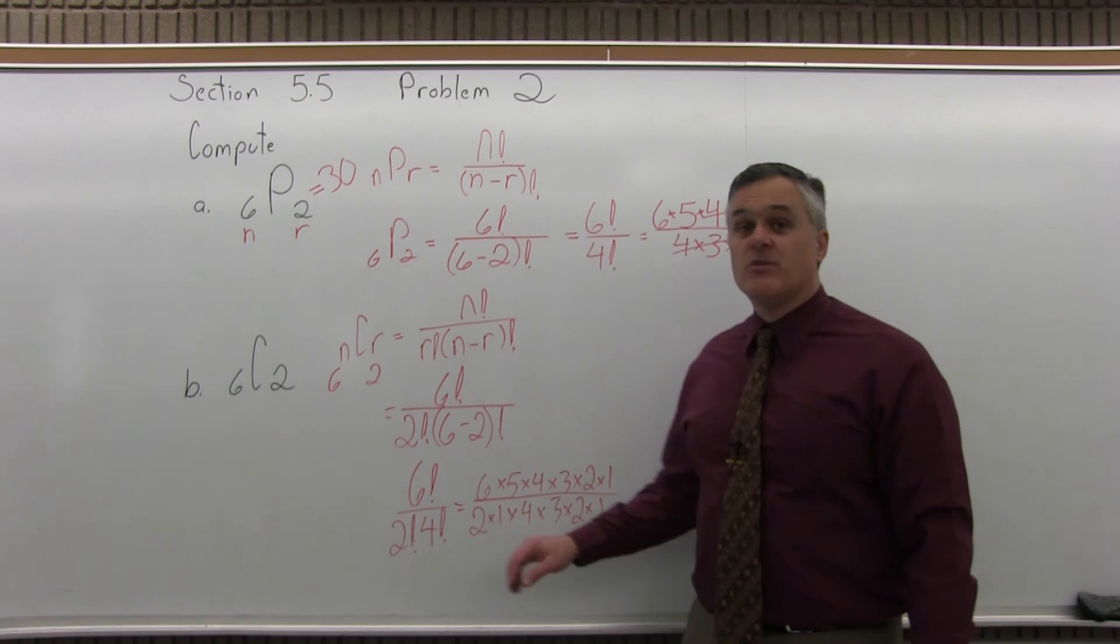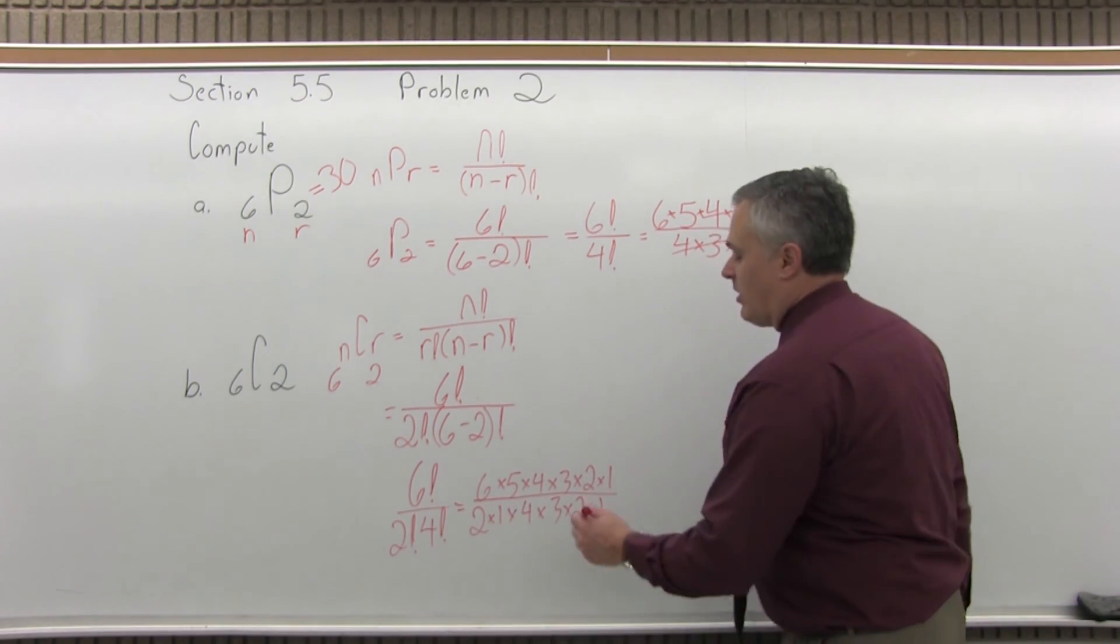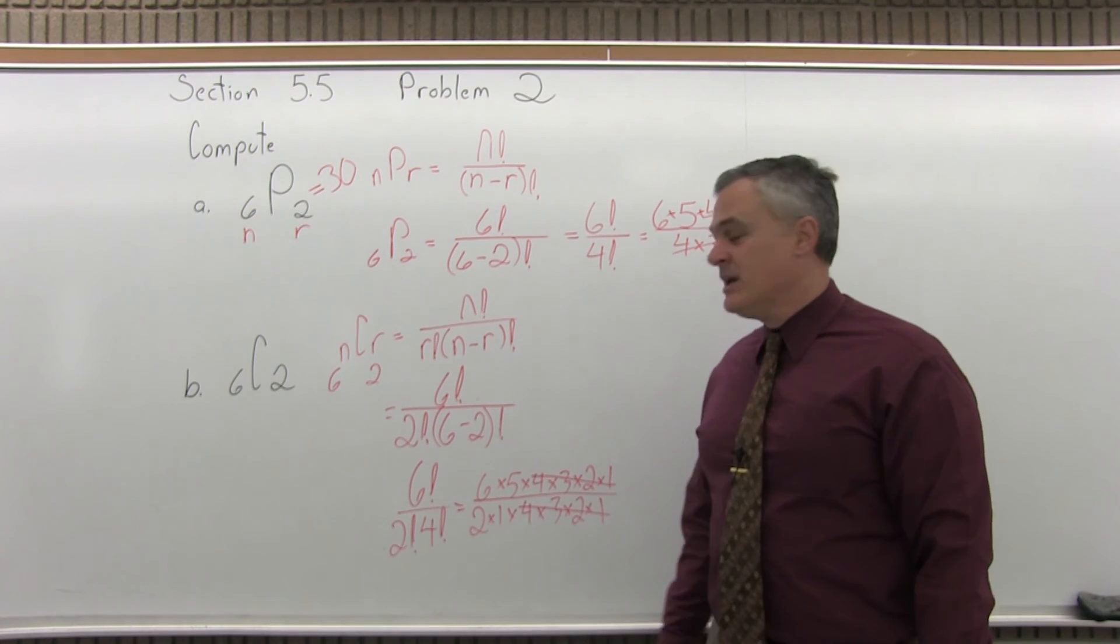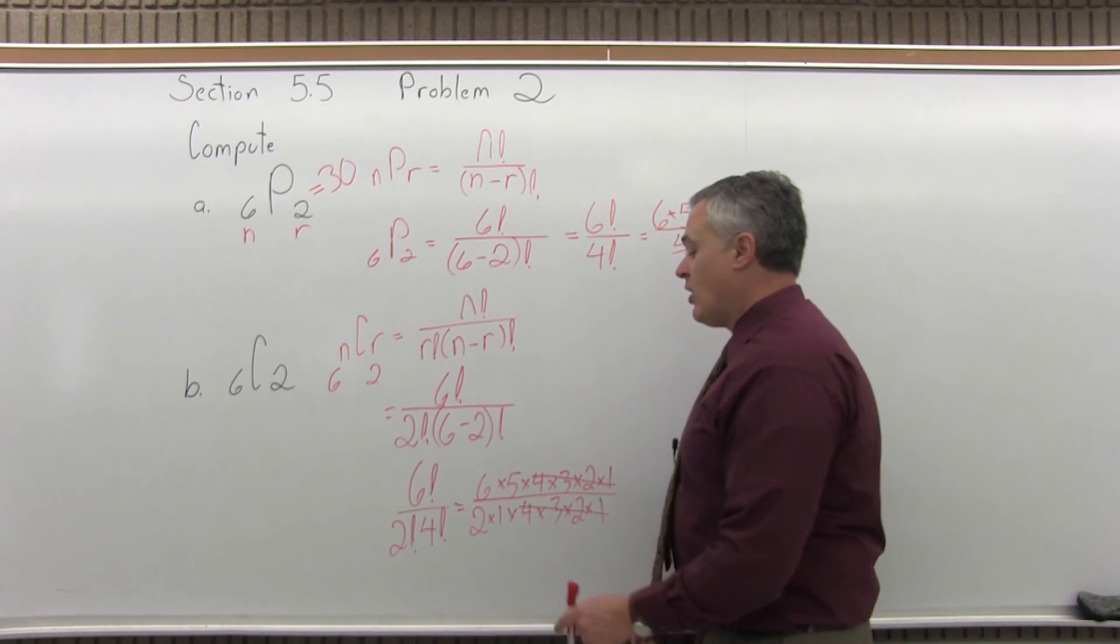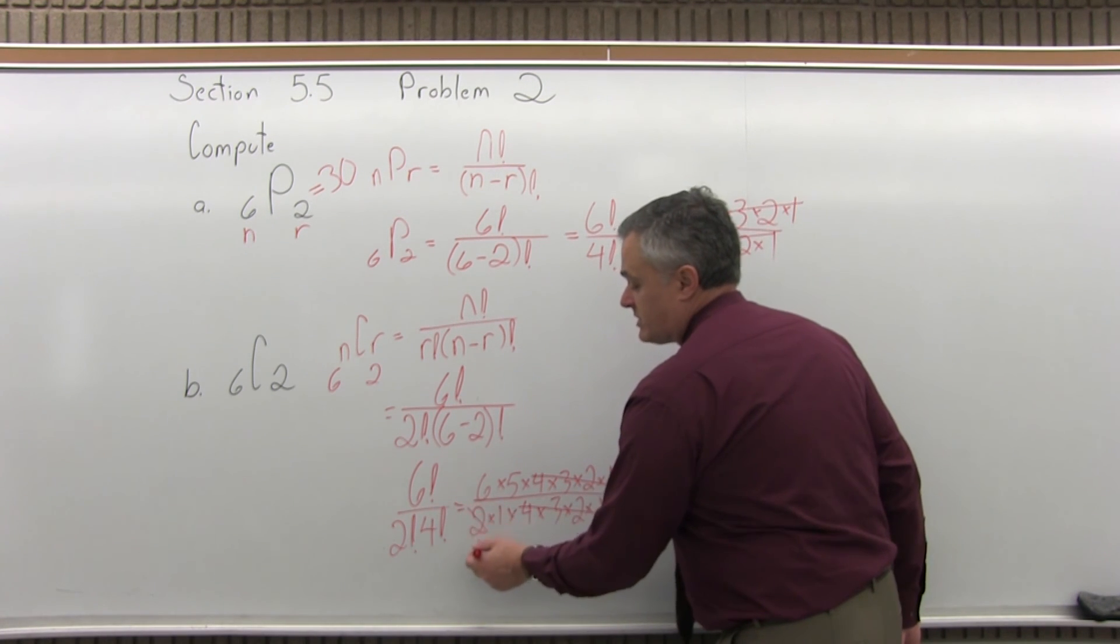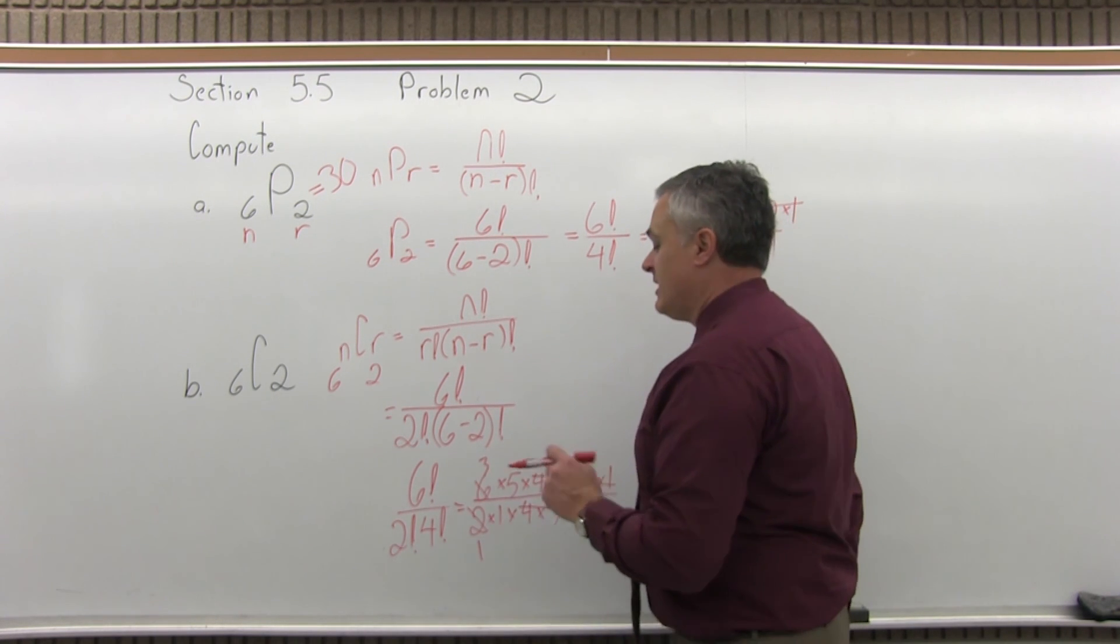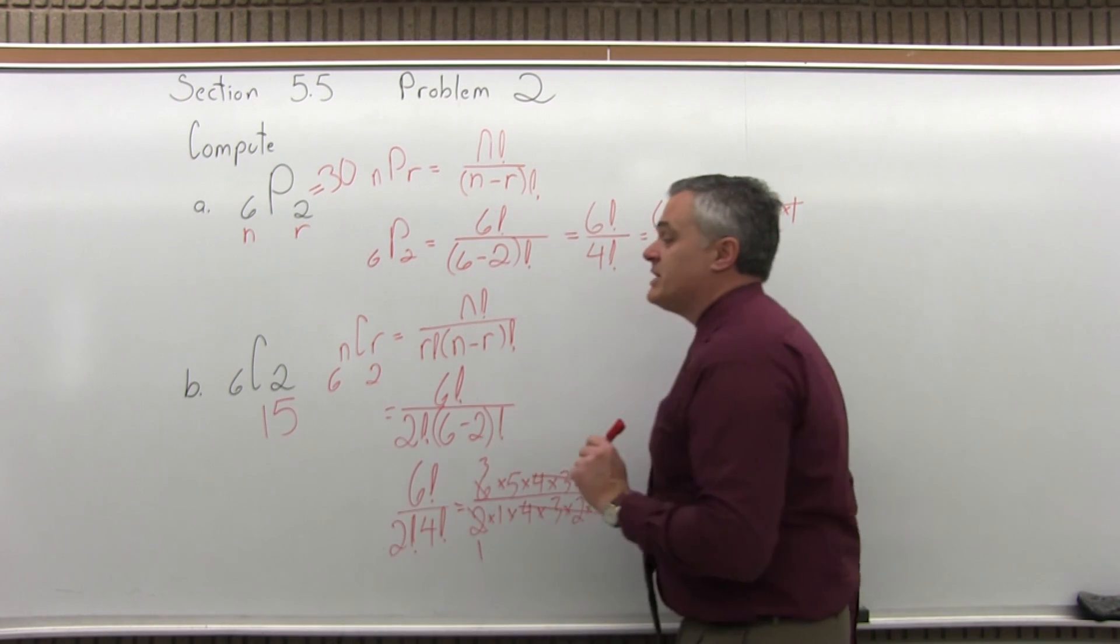And again, you could multiply out all of that and then reduce it, but it's a whole lot easier if you just cancel 4, 3, 2, 1 in the top and in the bottom. Now, at this point, you have 30 over 2, which you can reduce to 15. Or, you can reduce it a little further. 2 goes into 2 once, 2 goes into 6 three times. You're left with 3 times 5. 3 times 5 is 15. So, 6 combination 2 is 15.